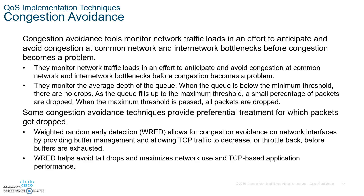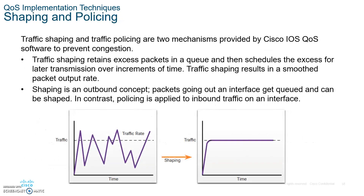When it comes to congestion avoidance, there are two key tools. Write down the bottom two bullet points: Weighted Random Early Detection (WRED) allows for congestion avoidance on network interfaces by providing buffer management and allowing TCP traffic to decrease or throttle back before buffers are exhausted. WRED helps avoid tail drops and maximize network use and TCP-based application performance.